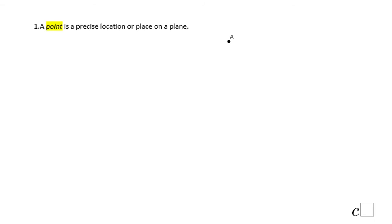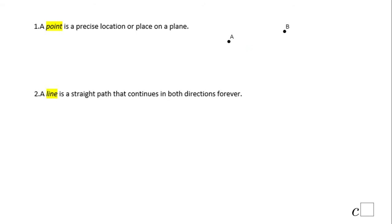The first one you see here is what we call a point — Point A. You see we use a capital letter. The point is nothing else than a place on a plane. Here is point A and this is point B.